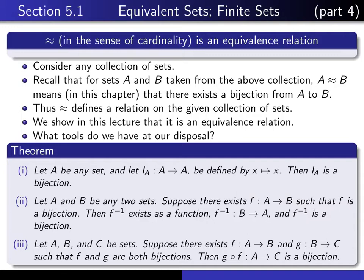And thirdly, the third part of the theorem tells us that when you take the composition of two bijections, you get another bijection. These are all results that we considered in some detail in the chapter on functions, and these are what we're going to use in order to prove the main result of this section.